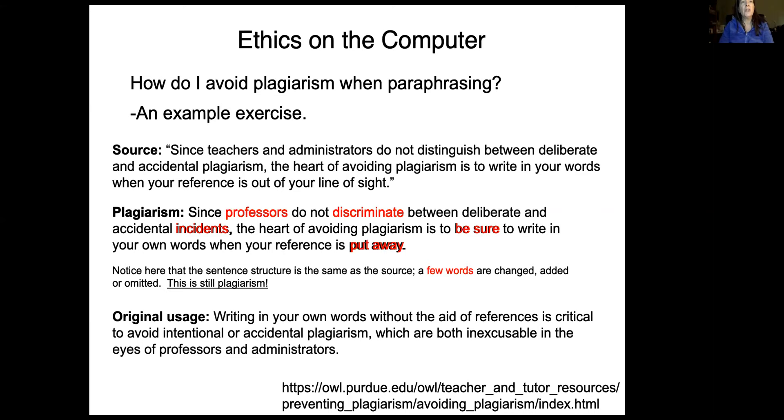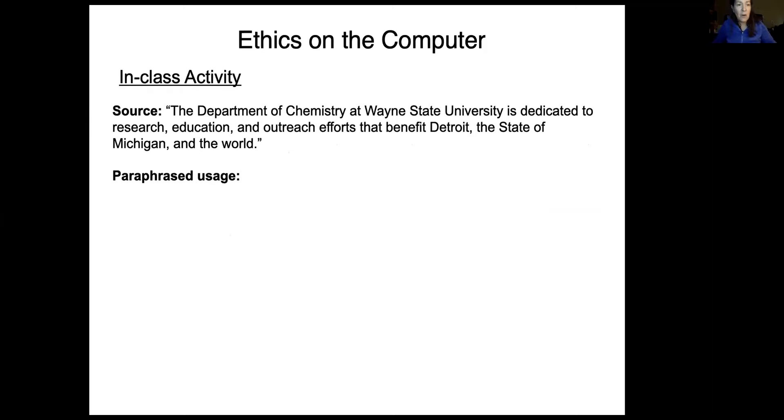So what do you do? What do you do? Again, you put the source away and you write a sentence. And so I wrote a sentence that I thought sounded pretty good and really was in my own words. So here's my original use. Writing in your own words without the aid of references is critical to avoid intentional or accidental plagiarism, which are both inexcusable in the eyes of professors and administrators. You can see what looked like a perfectly beautiful sentence as our source. I was able to transform that sentence into something that made sense to me and likely fits better into the context of my document. So it's something that you have to be committed to. But once you get used to the paraphrasing, I think you'll be really good at it. Let's do a little exercise together.